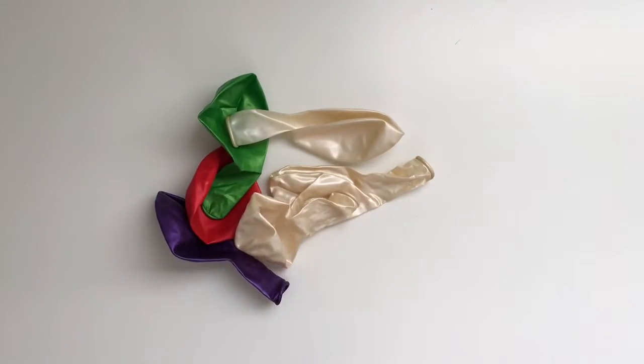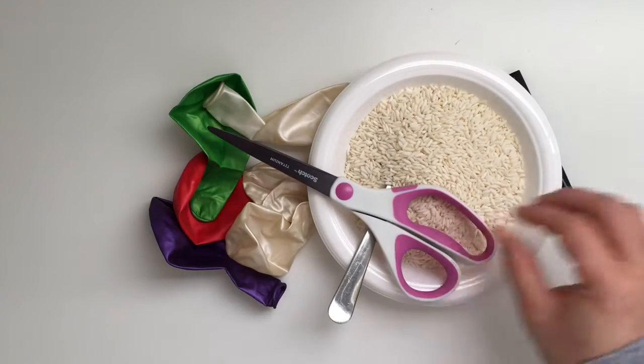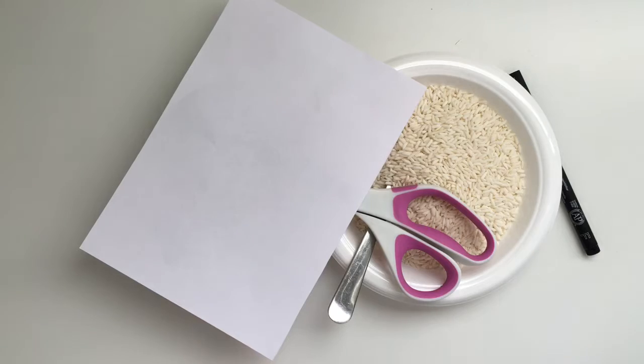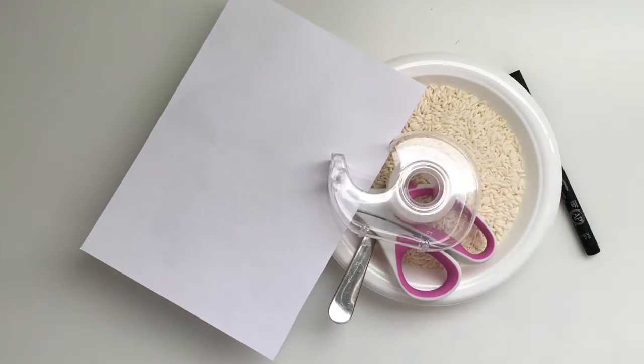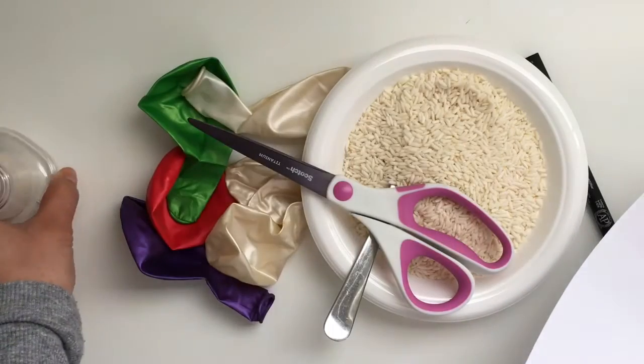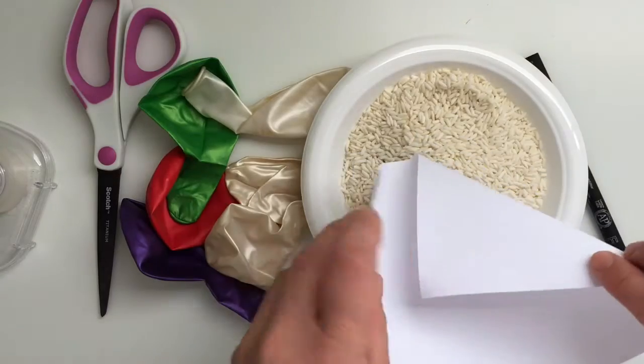What we need is some balloons, then we need some rice to pop into our balloons for our stress ball, a black marker, scissors to cut our balloons, we need some paper so we're going to use this to make a funnel, and also some sticky tape to tape our funnel together. Are you ready to make our stress ball?